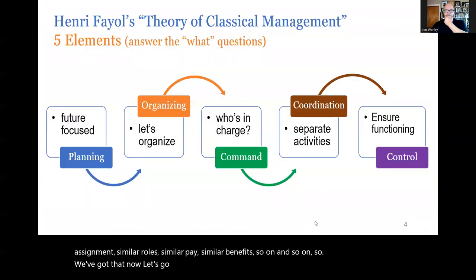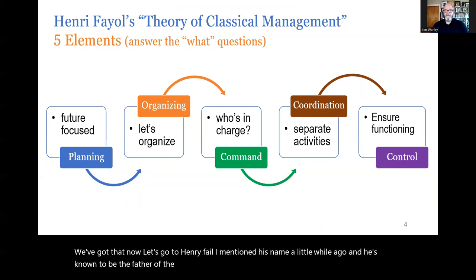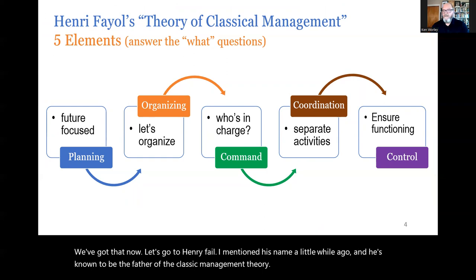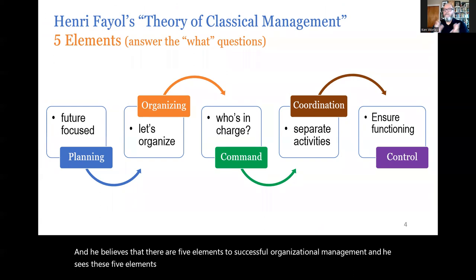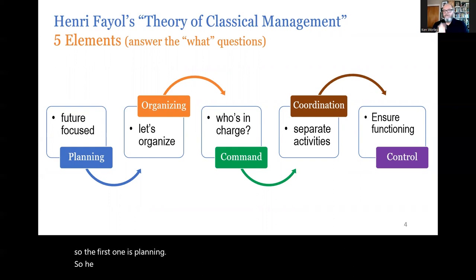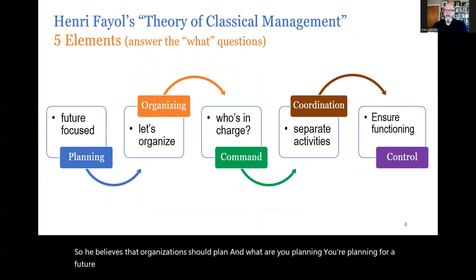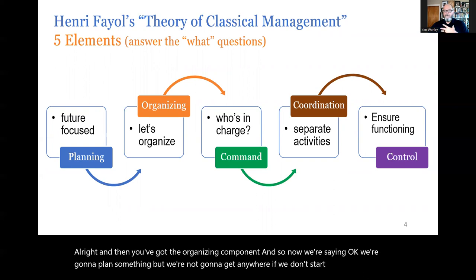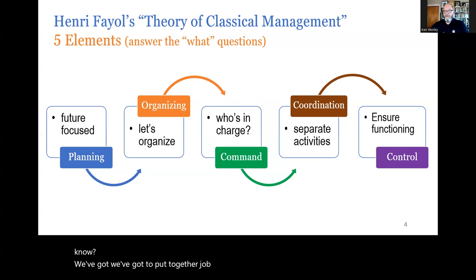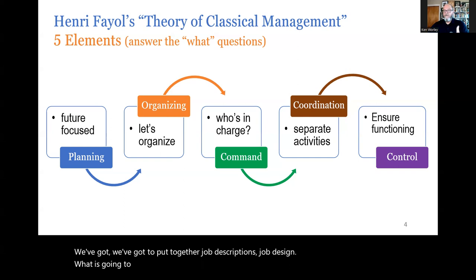Now let's go to Henry Fayol. He's known as the father of the classic management theory, and he believes there are five elements to successful organizational management — these five elements answer the 'what' questions of organizing. The first one is planning: organizations should plan for a future focus — how can we be better at what we're going to do? Then there's the organizing component: we're not going to get anywhere if we don't start to organize it, putting together job descriptions and job design — what is going to be necessary to have an organization that will accomplish what we plan?